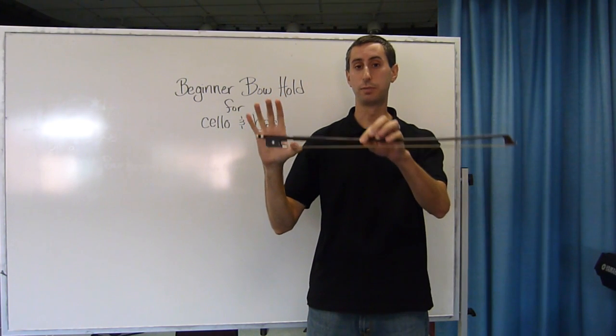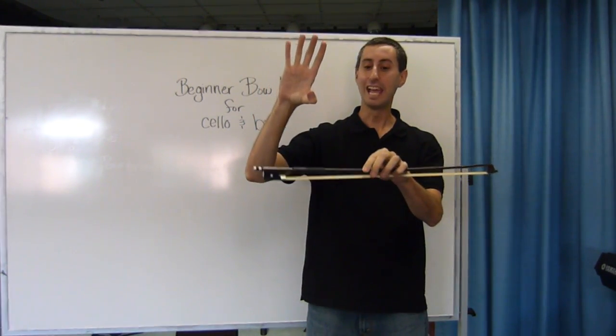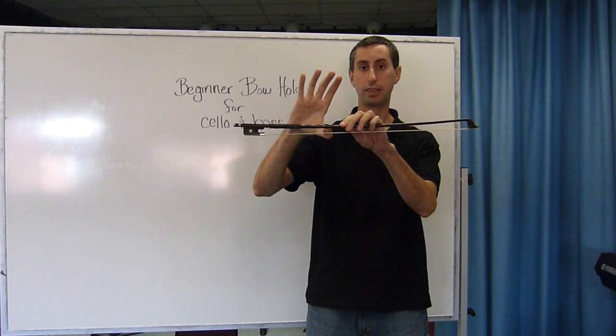Then once you've found the balance point of your bow, which is about here, place the nail of the smile thumb right at the balance point.